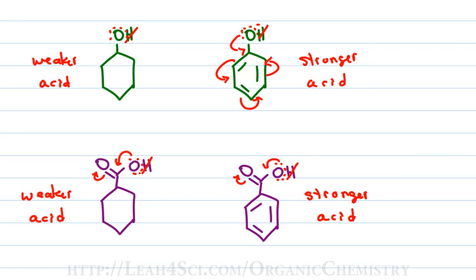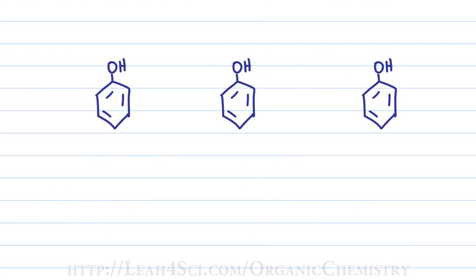So we've established that phenol is decent acid because the negative oxygen can resonate into the ring. But now what happens if I put nitrogen containing groups onto that benzene ring? For the first one, we'll put an NH2 in the para position. For the second one, we'll put an NO2 in the para position. And for the third one, we'll put an NO2 in the meta position.